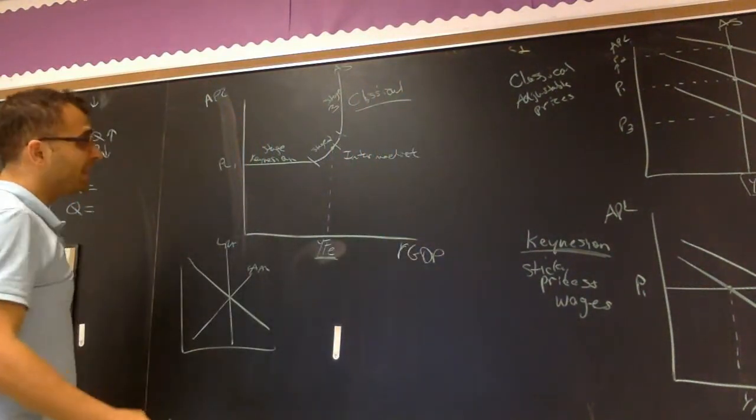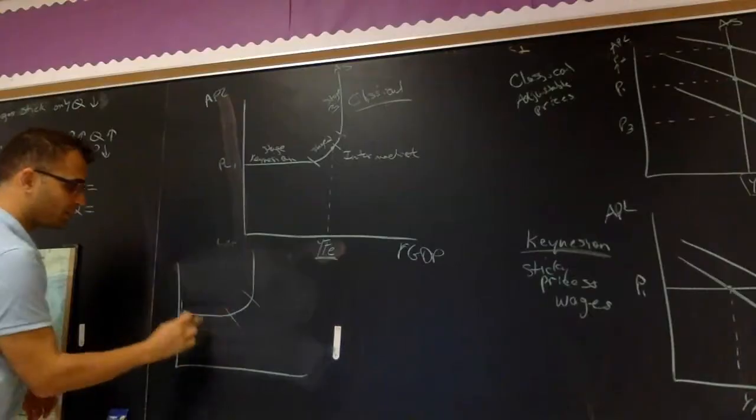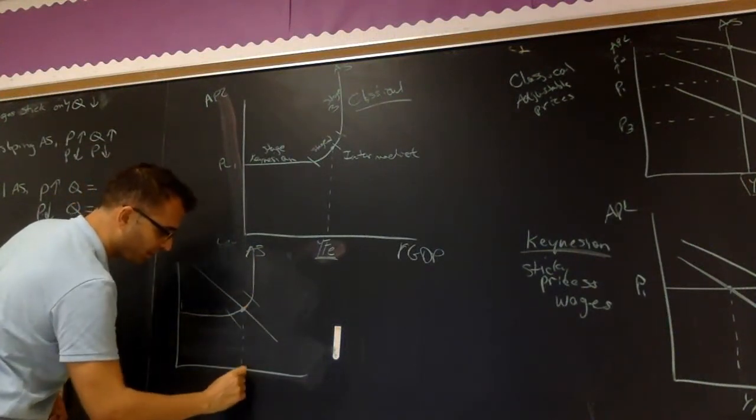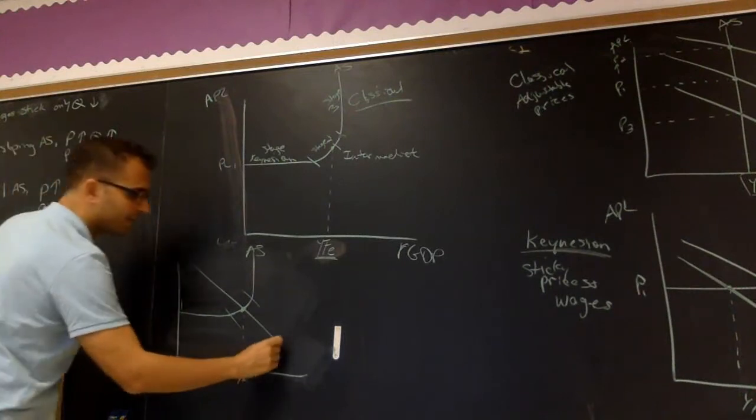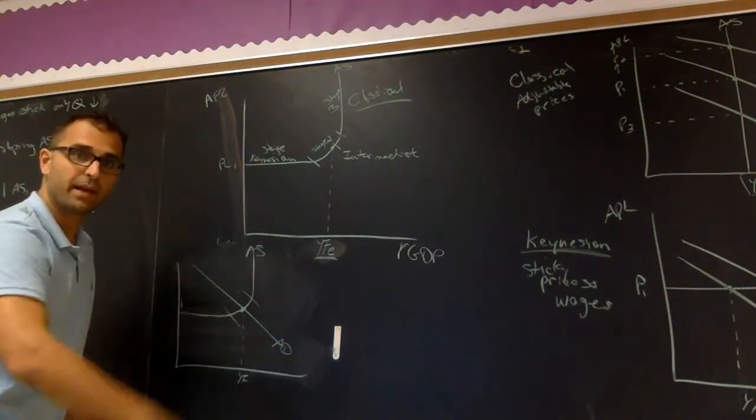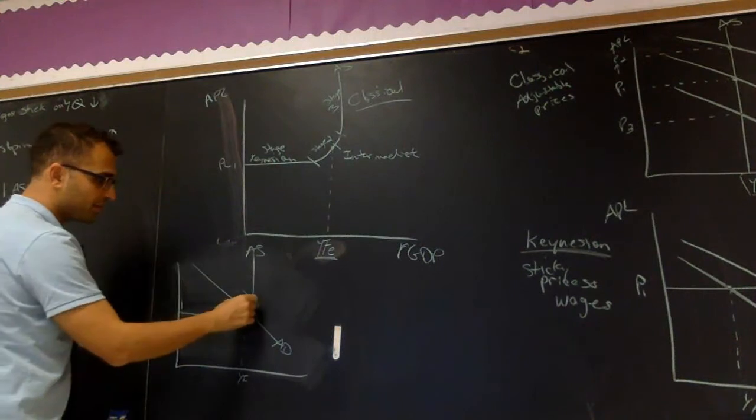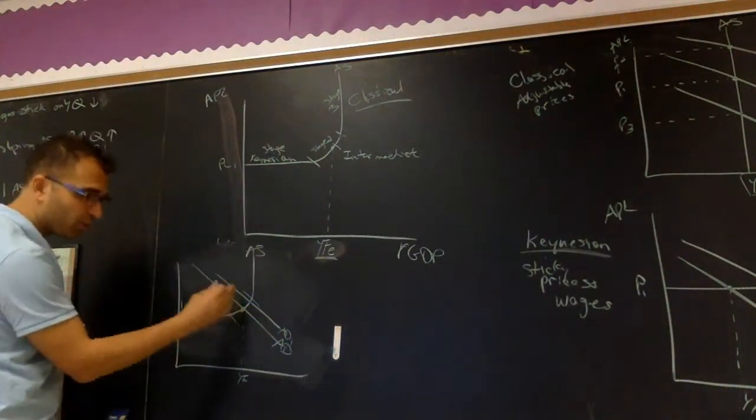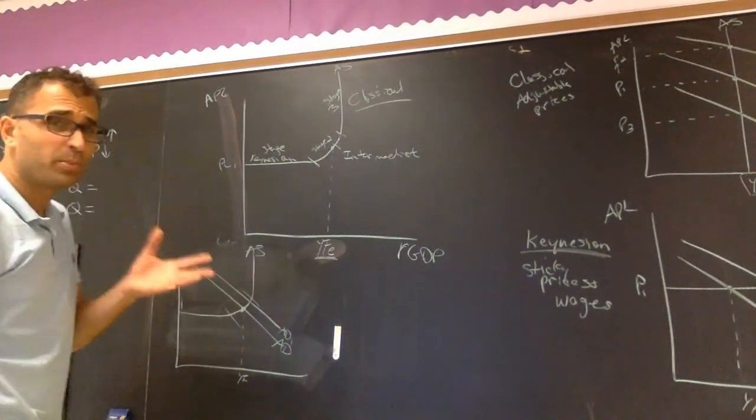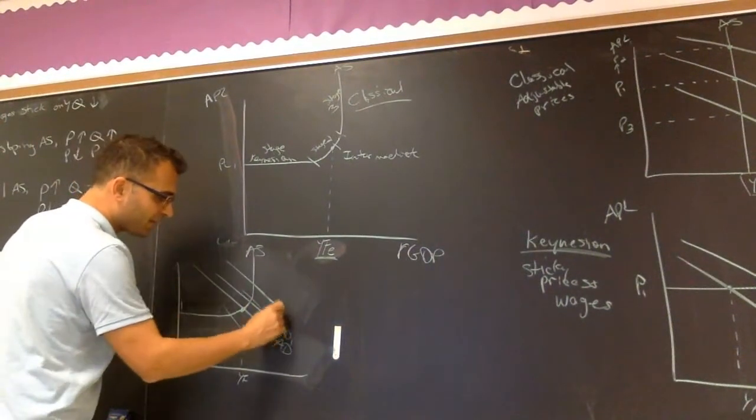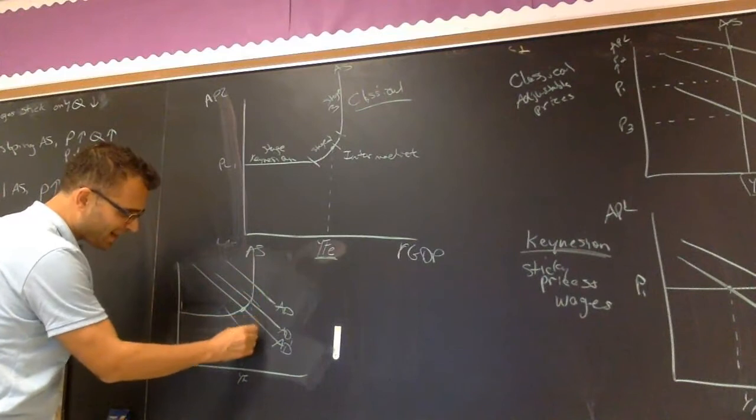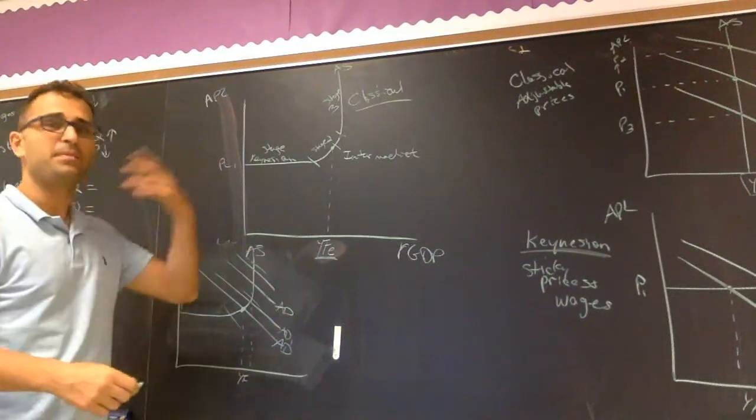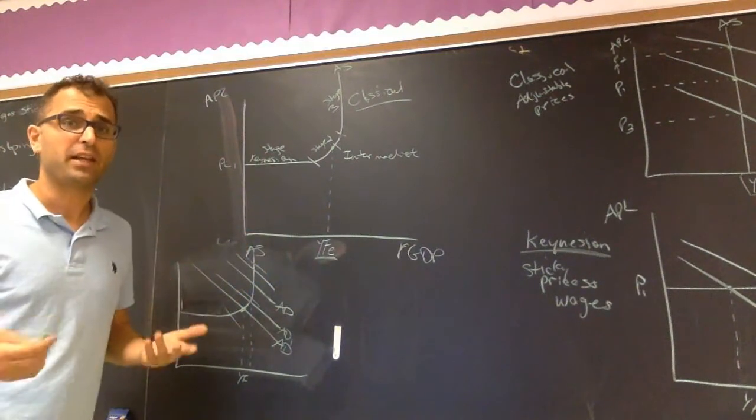So looking at this, stage one, stage two, stage three, aggregate supply. If aggregate demand is here and this is my full employment YF, then let's say there's an increase in aggregate demand. Well, if aggregate demand leaves this section, it goes up a little bit, then there's no problem. We get a little more output, as much as we can, price goes up just a little bit. But what if aggregate demand keeps increasing? Well, then output, yeah, it's going to be a little bit greater than YF, but not much. It physically cannot. If aggregate demand keeps increasing, the only thing that's going to change is the price level.